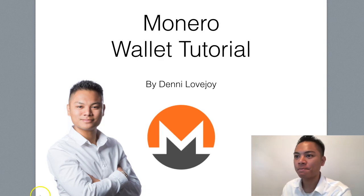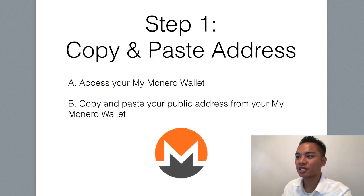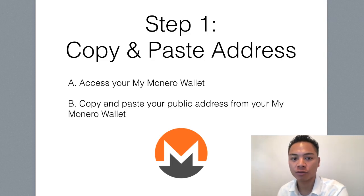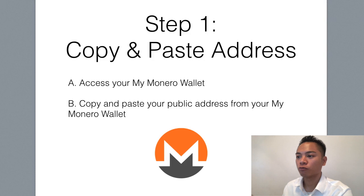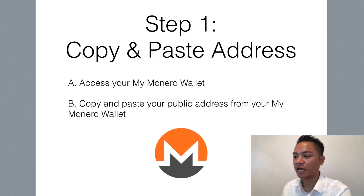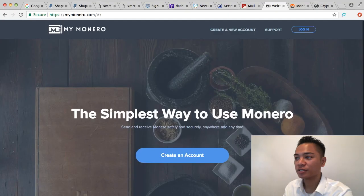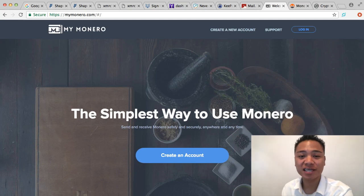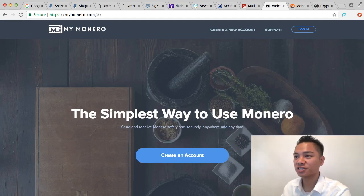So let's jump right into it. The first step here is to copy and paste the address. You're going to have to access your MyMonero wallet to do this and copy and paste that public address from that wallet. I'll go ahead and show you what that looks like. You're going to have to access this web wallet, which is mymonero.com.